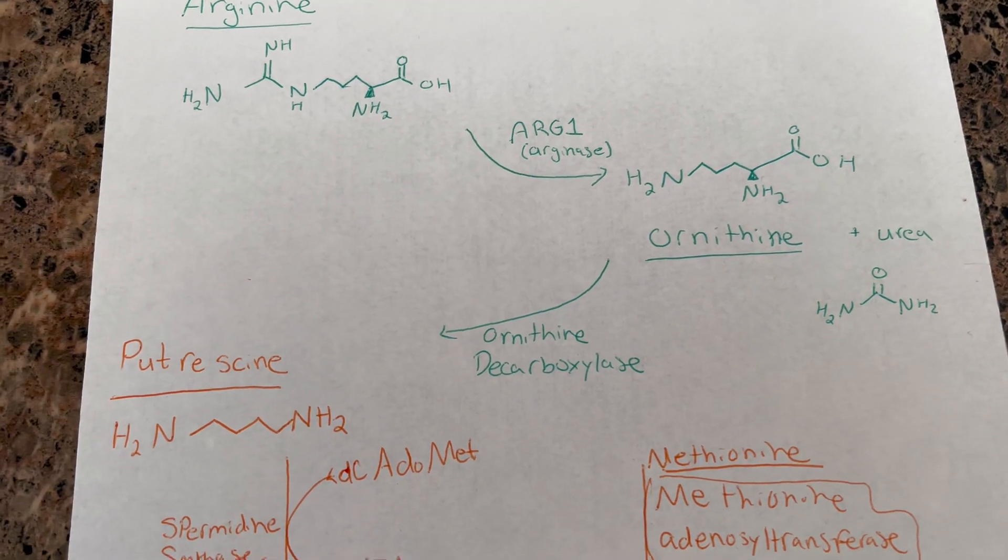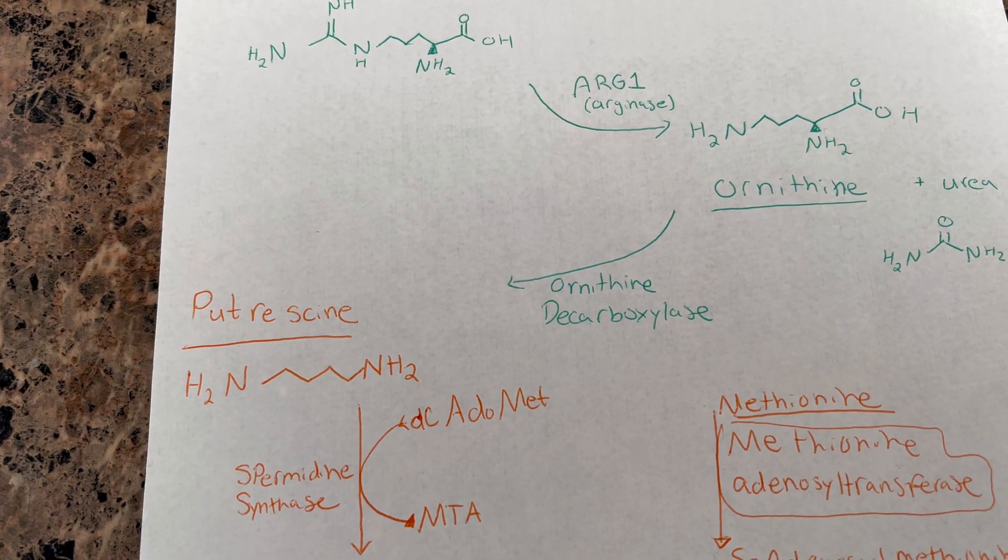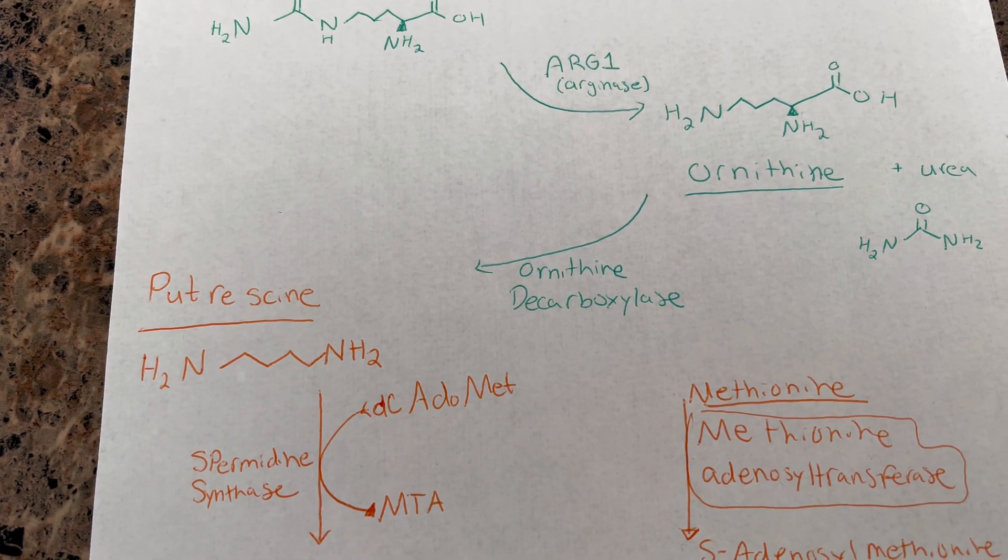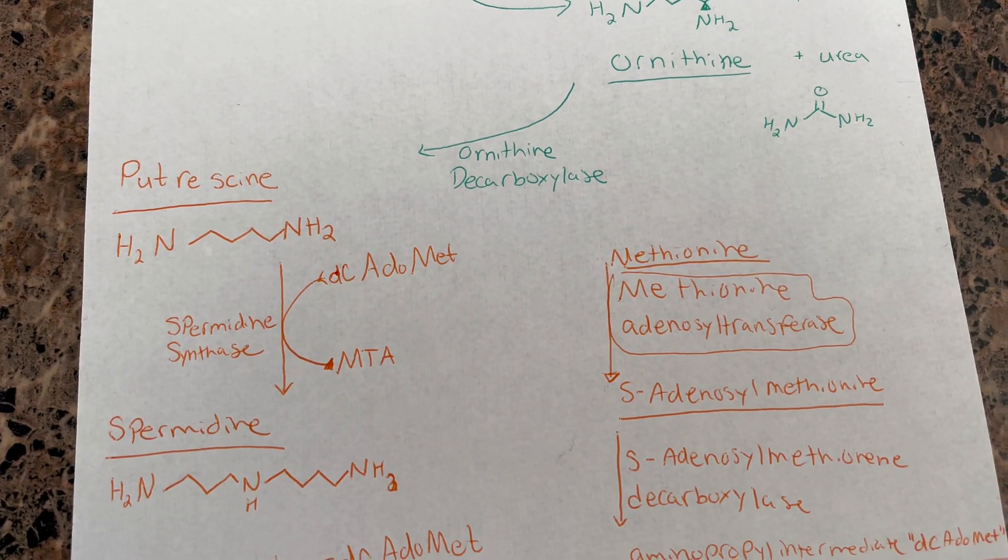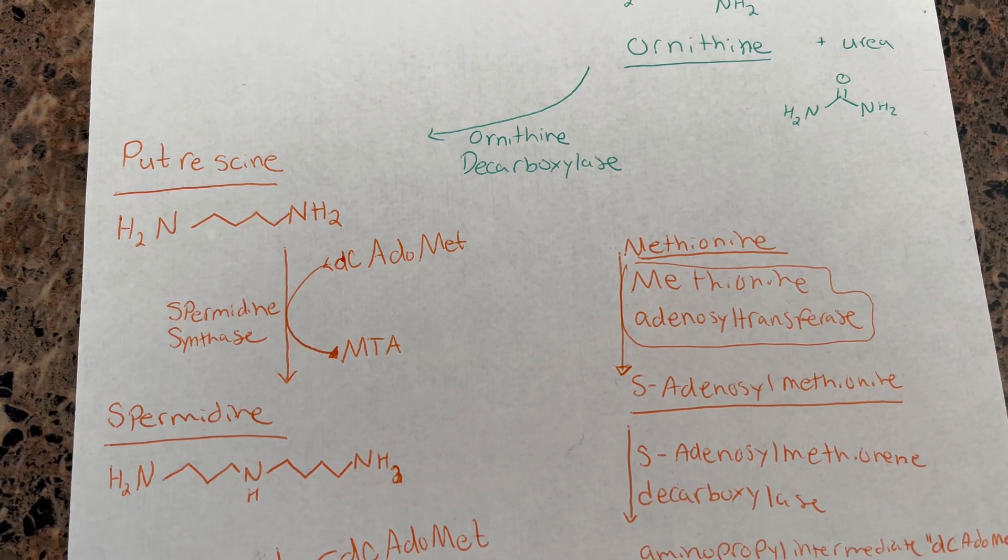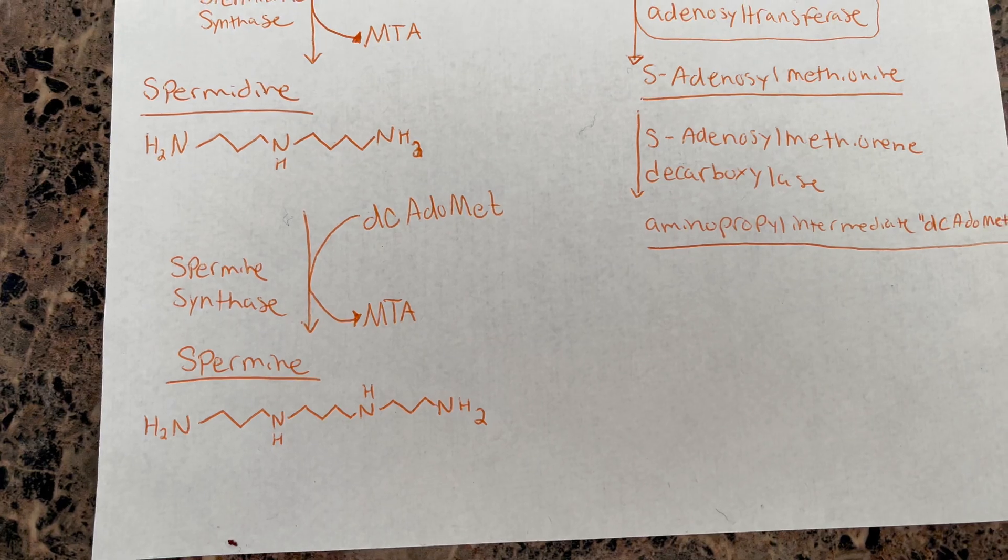From there, ornithine will be decarboxylated to form this polyamine with two amine groups. From there, we will see that putrescine is converted to spermidine by aminopropyl transferase and spermidine synthase.